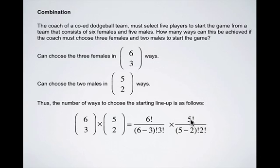We're going to multiply that by five factorial divided by five minus two factorial times two factorial. And this works out to be 20 times 10.